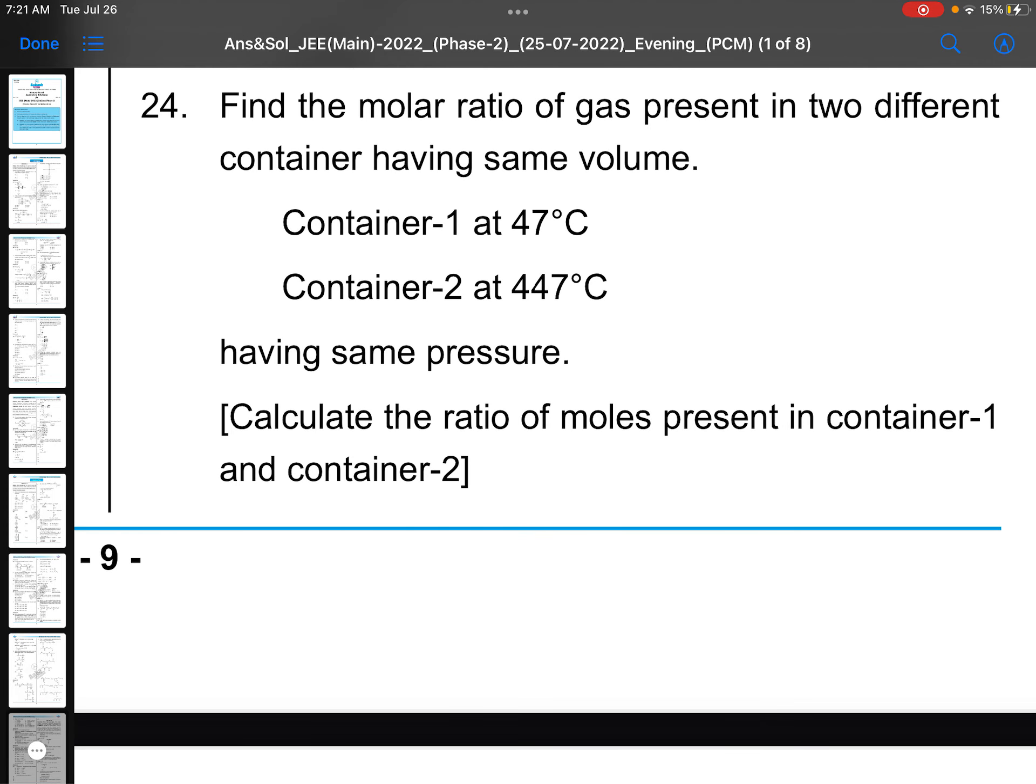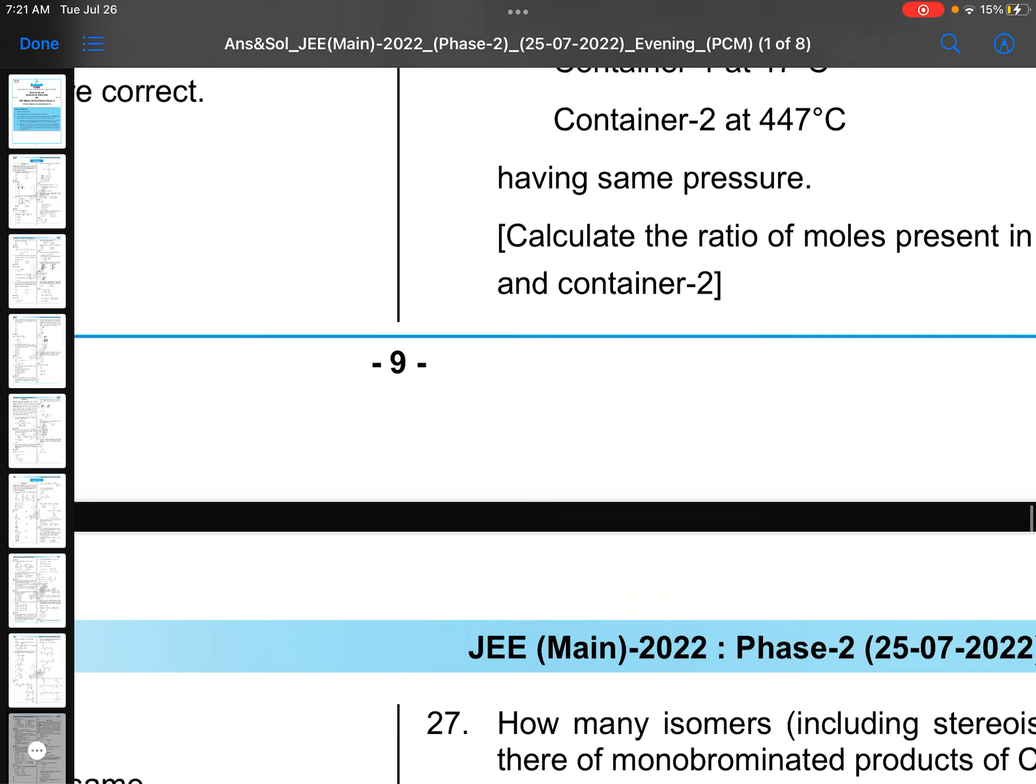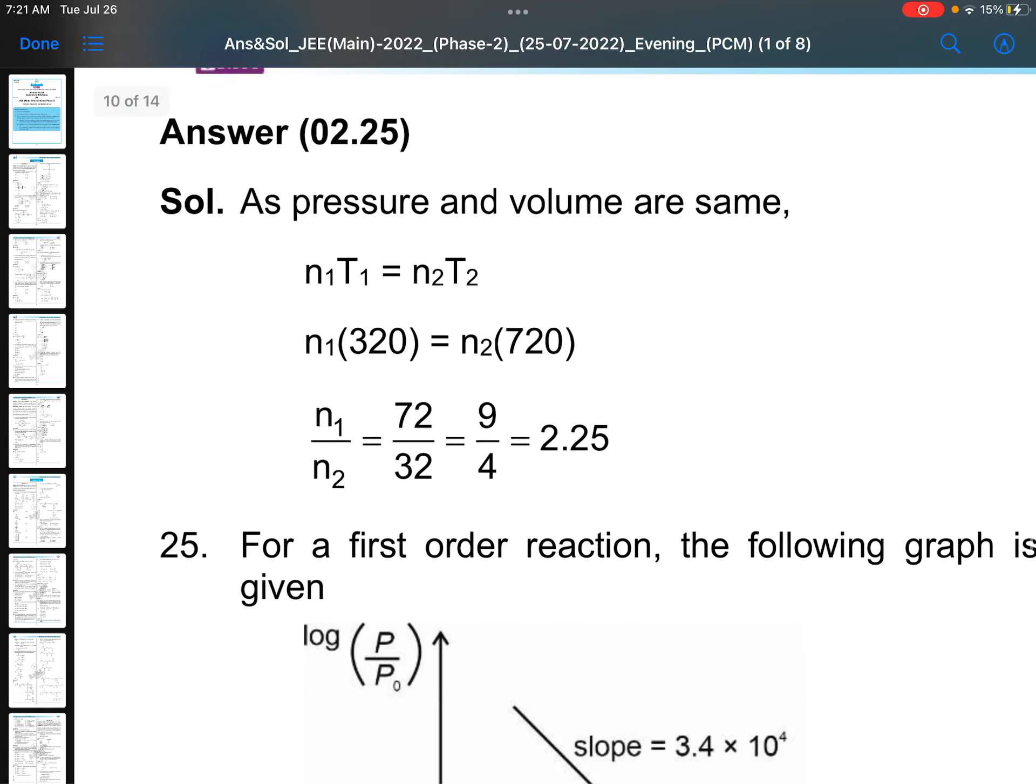Find the molar ratio of gas present in two different containers having same volume. Container one at 47 degree Celsius, container two at 447 degree Celsius. So here same pressure, same volume is there, so n1T1 is equals to n2T2. This is the formula. Direct calculation, 2.25 you are getting.